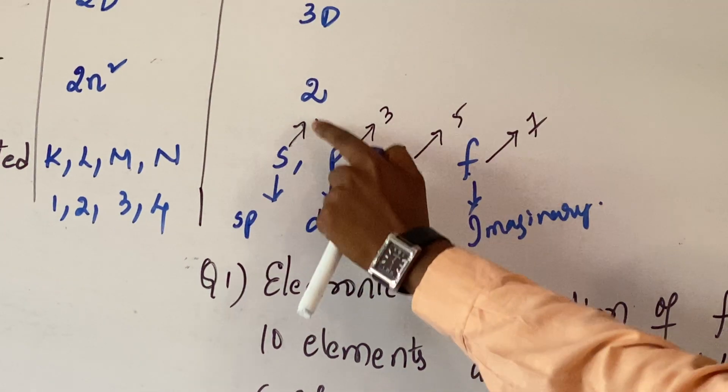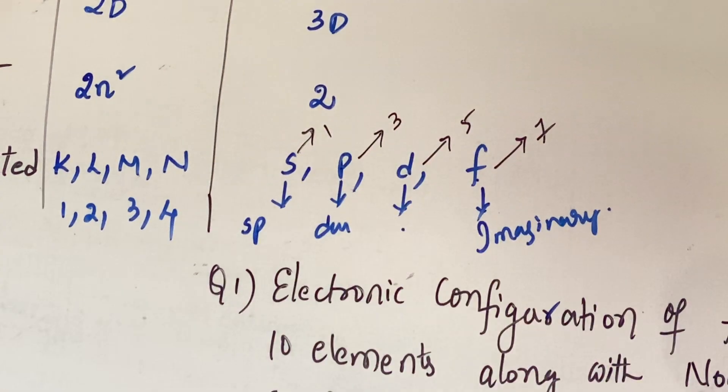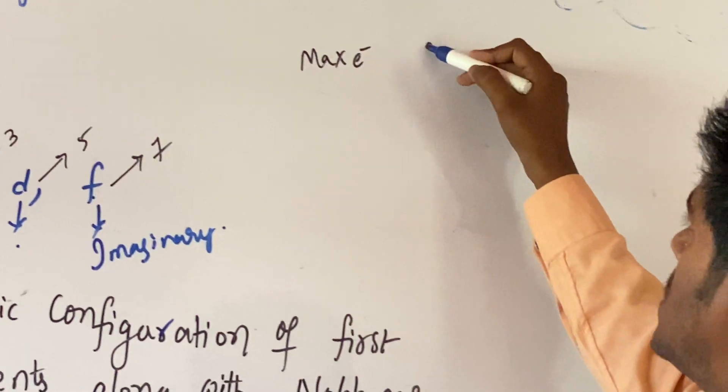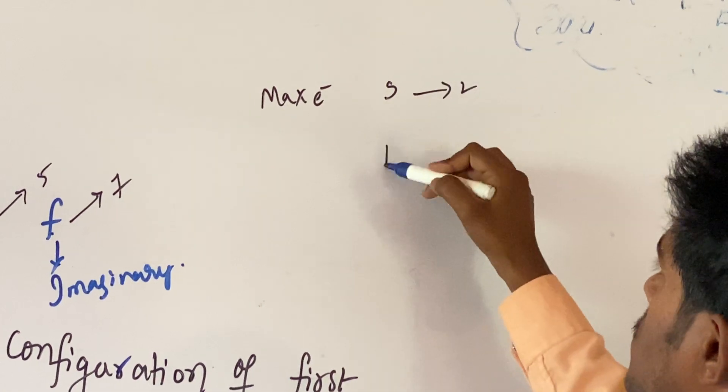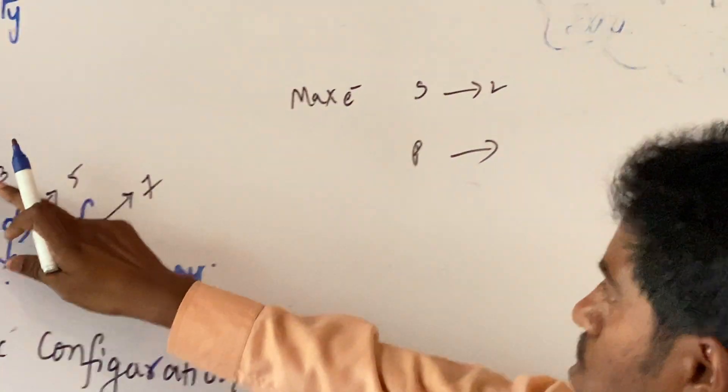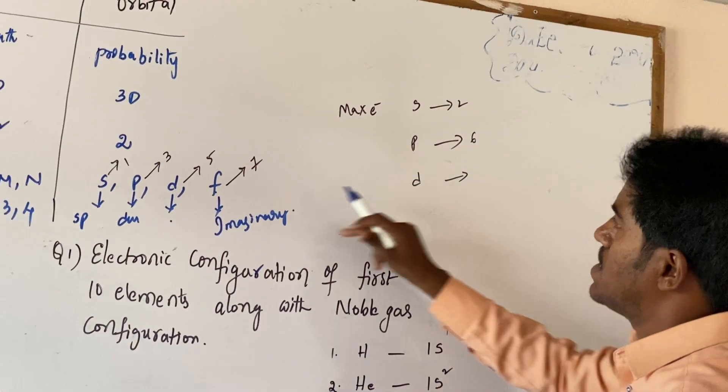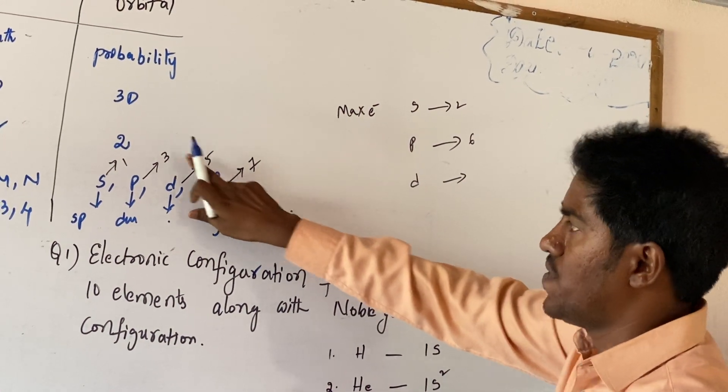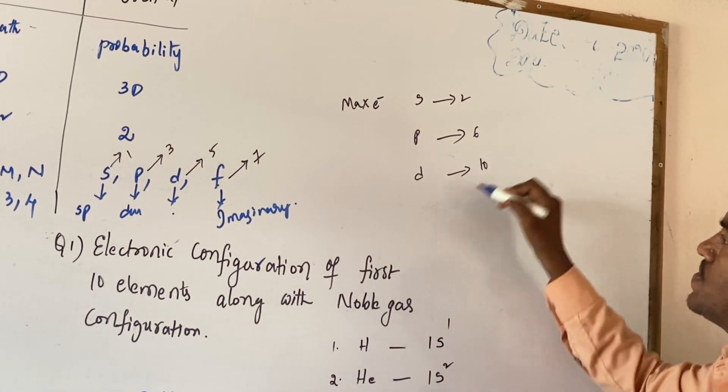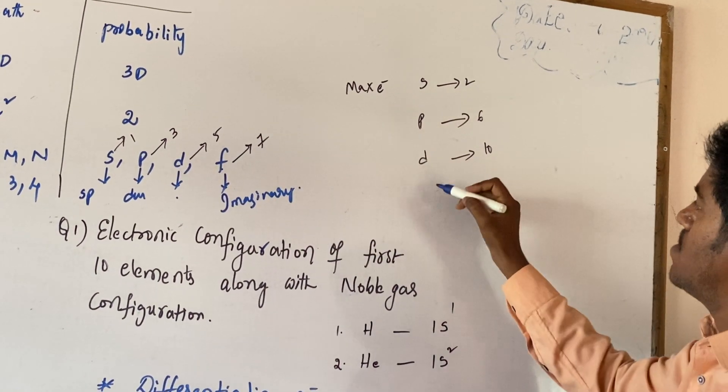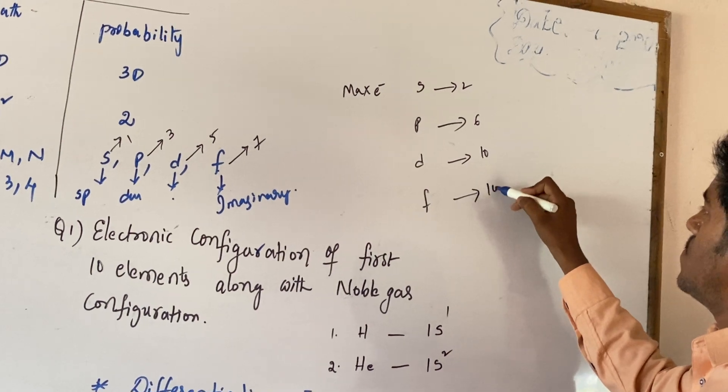Now, 1 into each orbital, 2 electrons. 1 into 2, 2. Maximum electrons in S orbital, 2, P orbital, 3 into 2, 6, and D orbital, degenerated orbitals are 5, 5 into 2, 10 electrons, and degenerated orbitals of F are 7. Now, 7 into 2, 14.